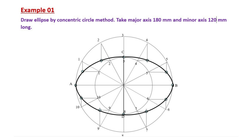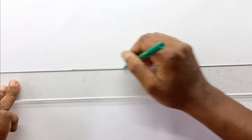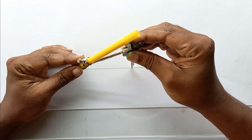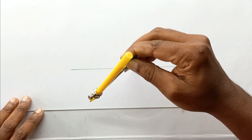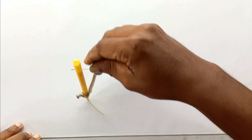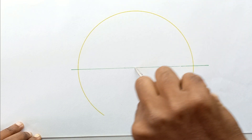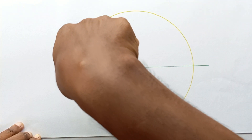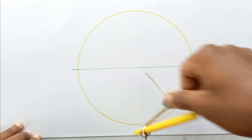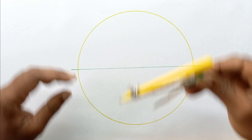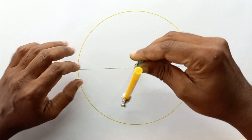First of all, you should draw two circles having diameters of 180 millimeters and 120 millimeters. Let's draw the two circles. First, let's draw the horizontal line, then draw the 120 millimeter diameter circle.